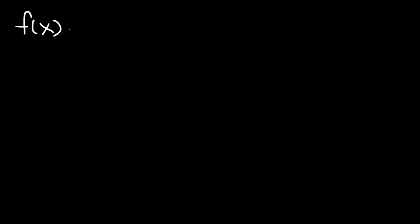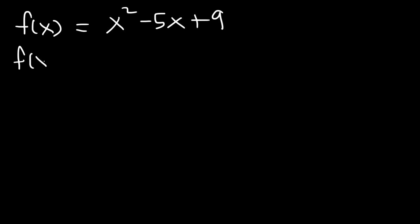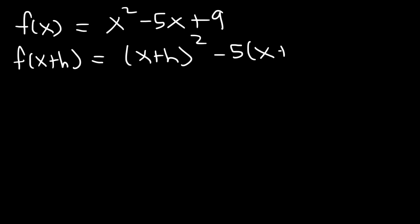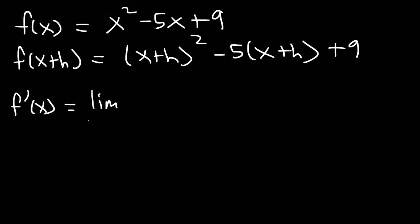Now the last example I'm going to go over is a polynomial function. So let's say we have f of x is equal to x squared minus 5x plus 9. What's the first derivative of this function? So first, what's f of x plus h? Instead of writing x squared, we write x plus h squared. Instead of writing 5x, it's going to be 5 times x plus h. So f prime of x is going to be the limit as h approaches 0.